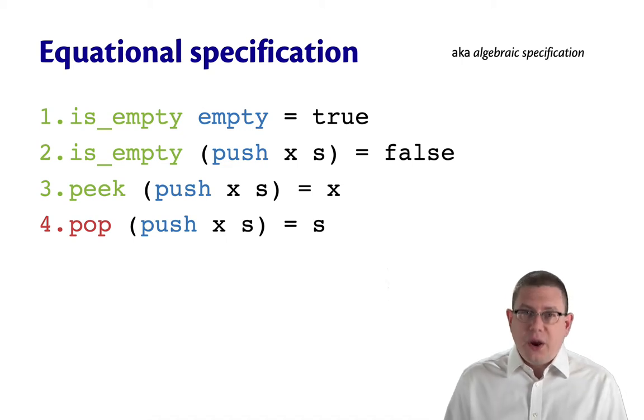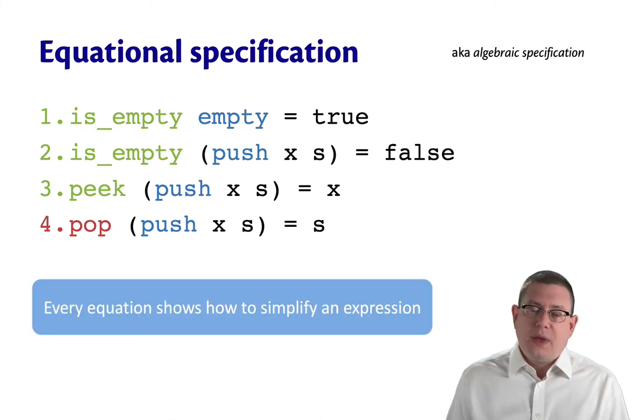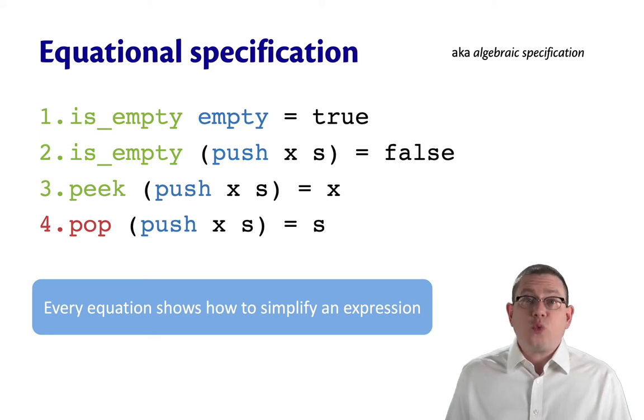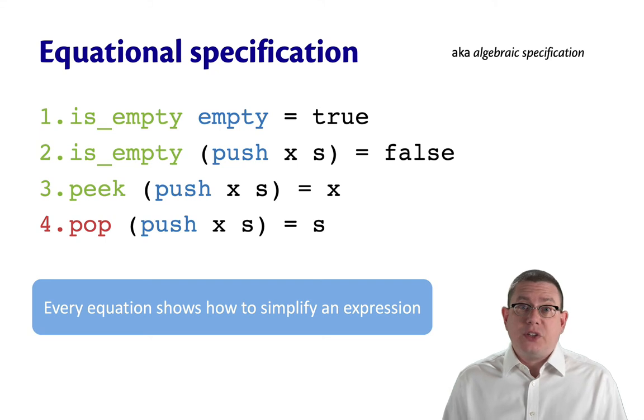So that's four equations that characterize the way these operations interact with one another. Furthermore, all of these equations show us how to simplify an expression. Notice how the right-hand side of each of these equalities is a simpler expression than the left-hand side. So not only are they telling us how the operations interact, they're telling us how they simplify at the same time.